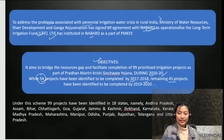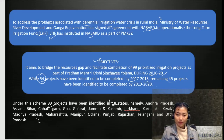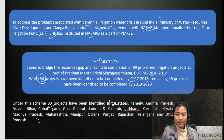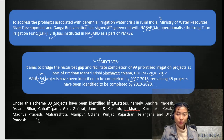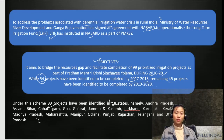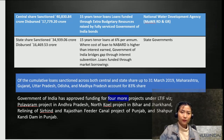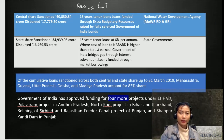There are 99 projects identified under 18 states. There might be questions on how many states there are. The 18 states are Andhra Pradesh, Assam, Bihar, Chhattisgarh, Goa, Gujarat, Jammu and Kashmir, Jharkhand, Karnataka, Kerala, Madhya Pradesh, Maharashtra, Manipur, Orissa, Punjab, Rajasthan, Telangana, and Uttar Pradesh. In this table showing the actual progress in LTIF, the central government sanctioned about 40,830 crore and disbursed about 17,779.20 crore.